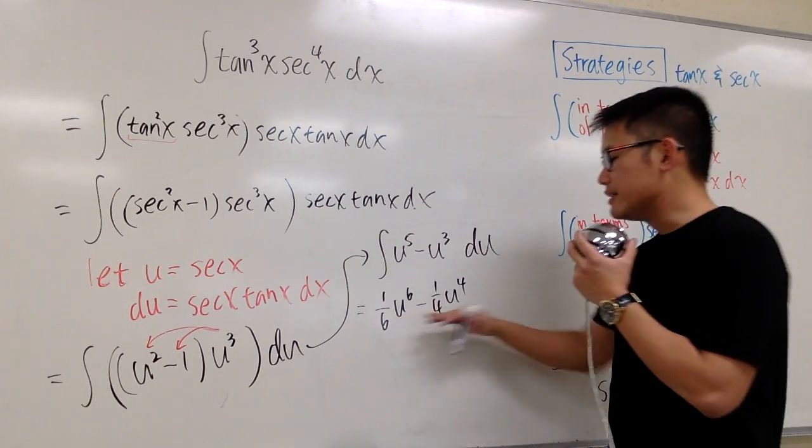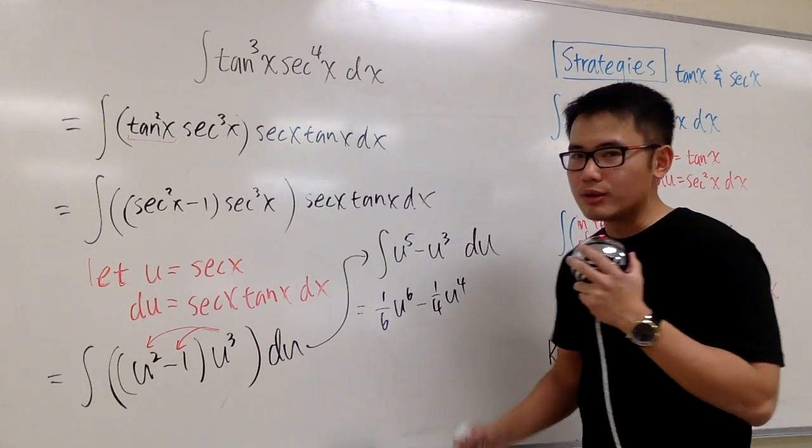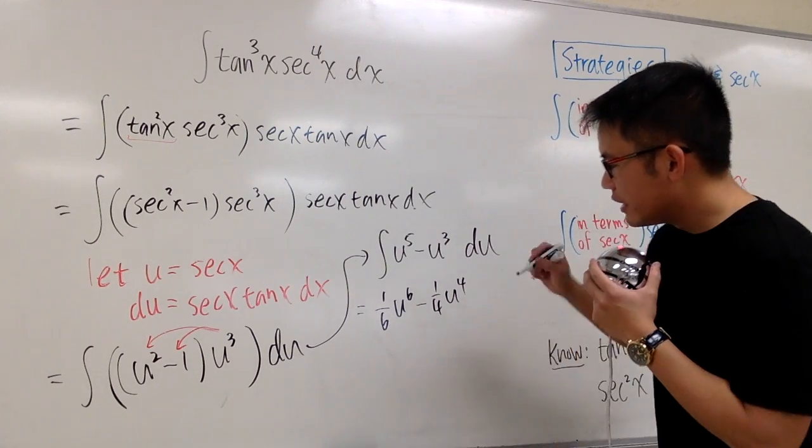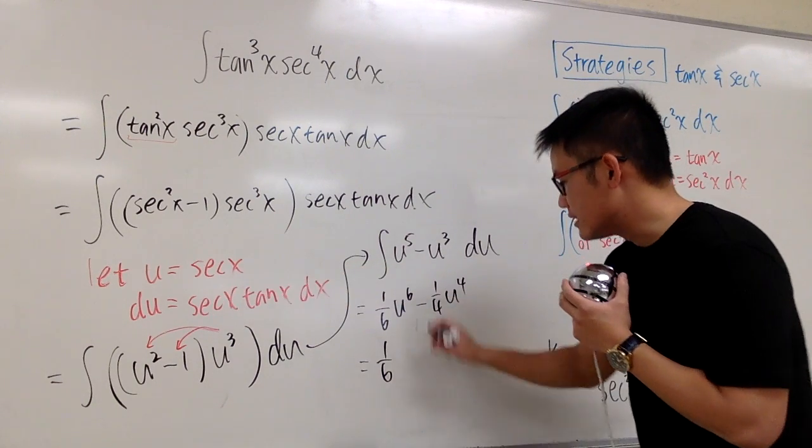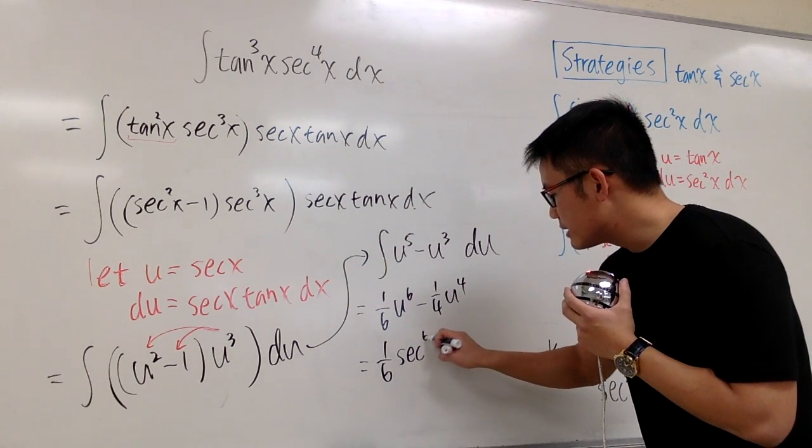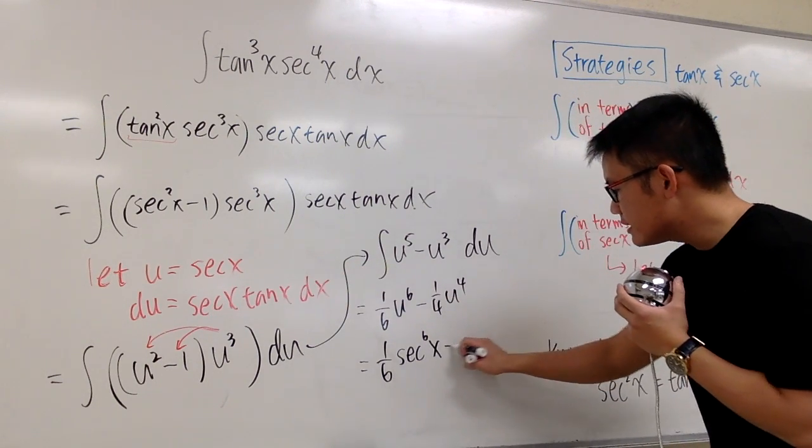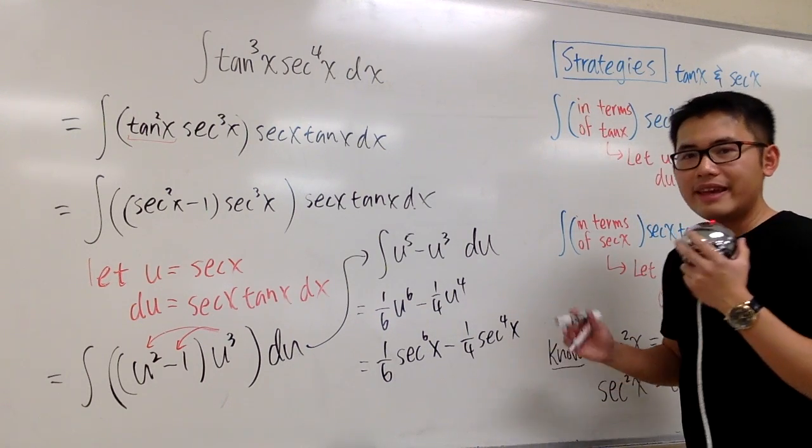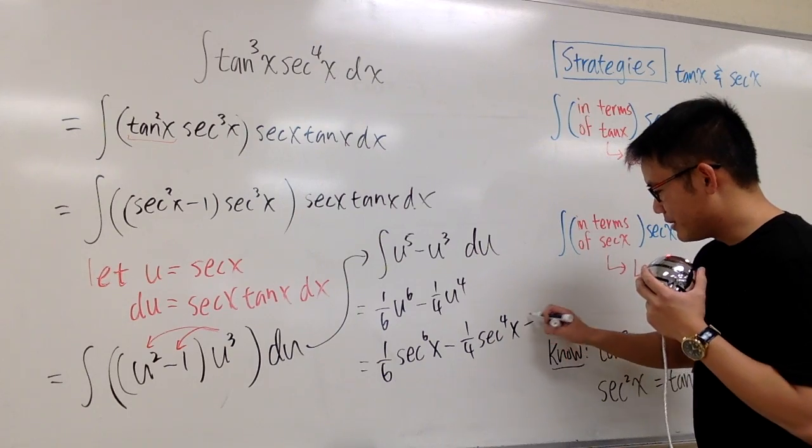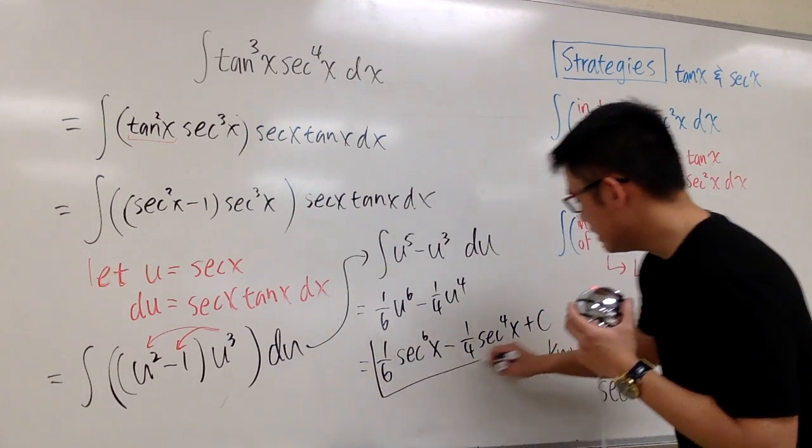At the end, I just need to take this expression back to the x world, back to the reality. Here we will have 1 over 6, secant x is the u. So secant to the 6th power x, minus 1 over 4, secant to the 4th power x. And then we are done. Plus c, that's it.